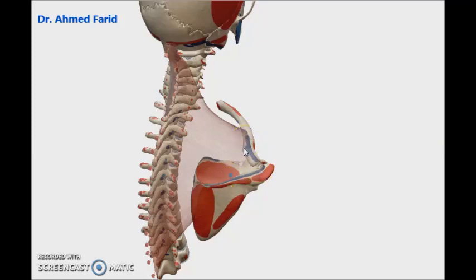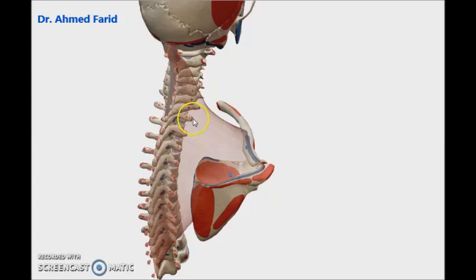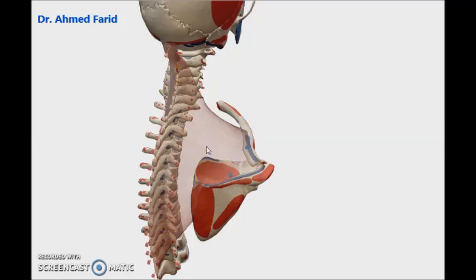The muscle converges to be inserted into a V-shaped area formed by the back of the clavicle, the medial aspect of the acromion of the scapula, and the upper border of the crest of the spine of the scapula. So the insertion of trapezius is this V-shaped area: back of the clavicle laterally, medial aspect of the acromion, and upper border of the crest of the spine.